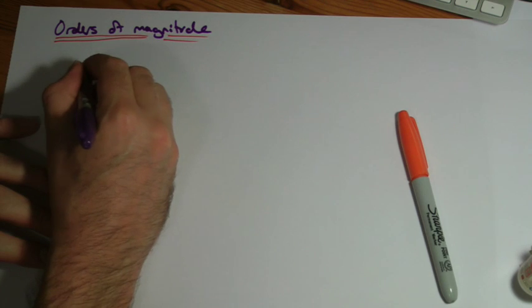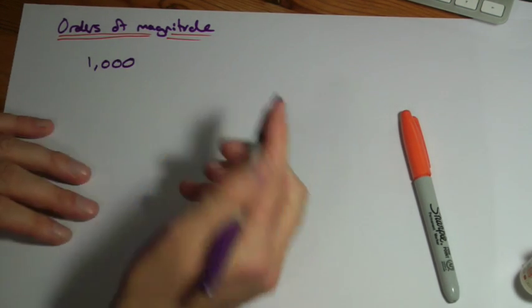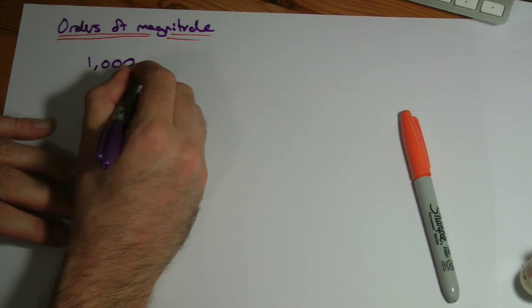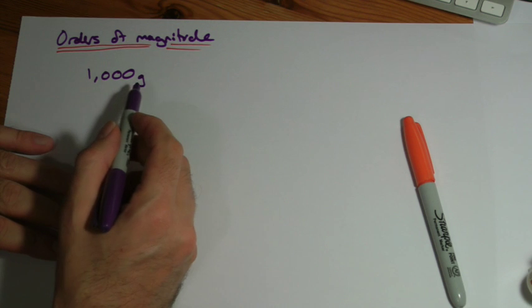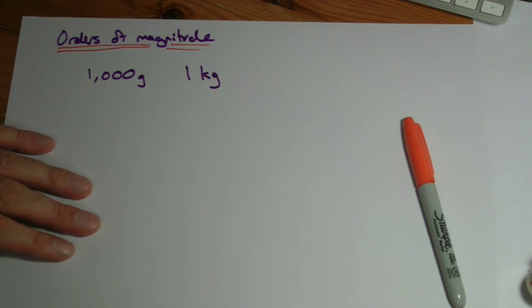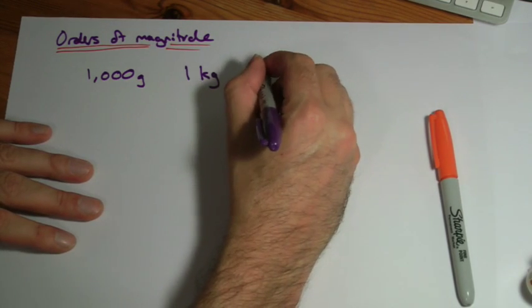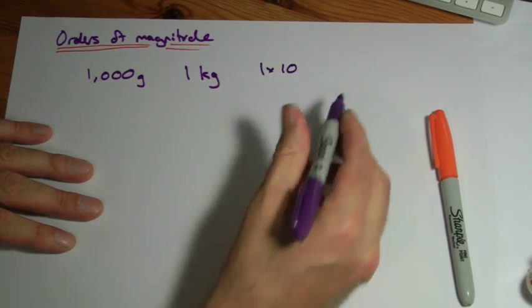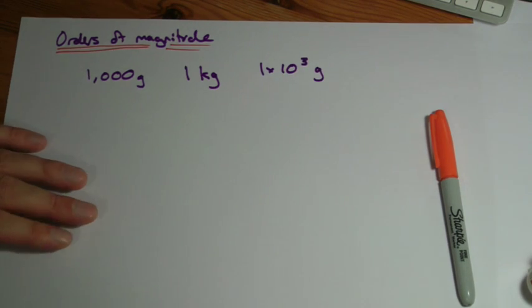It's all to do with numbers, so I could write a number, say a thousand. I'm going to put some units on just to make life easier for us, let's have grams. I could write a thousand grams like that, I could also write it as one kilogram, or I could write it in standard form. The standard form is the hardest one to get your head around I think at first: one times ten to the three grams.